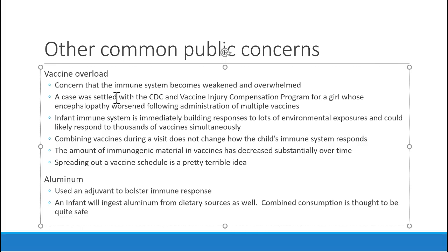Aluminum is used as an adjuvant to bolster immune response and is thought to be neurotoxic if consumed in large amounts. But infants and adults ingest aluminum regularly from dietary sources — breast milk and other dietary sources likely provide significantly more aluminum than the combined amount in all vaccines. There's a very small amount of aluminum in vaccines, and scientifically, this hasn't been proven to have any negative outcomes in children. The CDC covers this and other concerns in depth if you want to read the published literature.